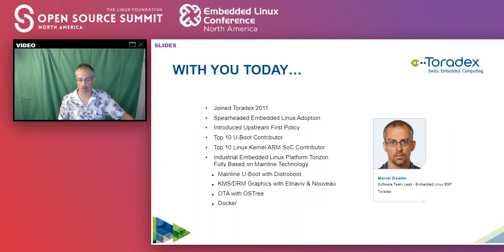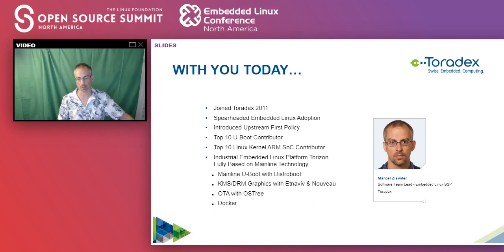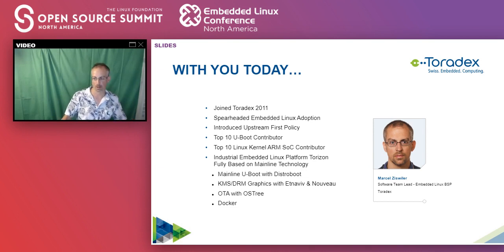Our latest platform is the industrial embedded Linux platform Torizon, and it's fully based on mainline technology. It uses mainline U-boot with Distribute, KMS DRM graphics with Etnaviv and Nouveau. It also uses over-the-air update with OSTree and supports containerized workloads with Docker.